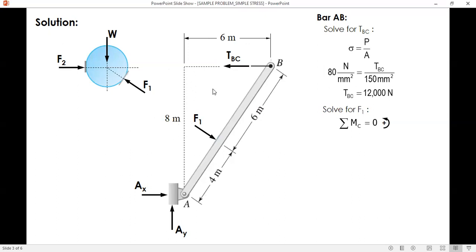8 is the perpendicular distance of TBC to point A. Sign convention is counterclockwise positive. The moment of F1 is negative since clockwise, and for TBC positive since it's counterclockwise. We have TBC times distance 8 minus F1 times perpendicular distance 4. Solving for F1, we will substitute the value of TBC 12,000, transpose this term, and after multiplying you divide by 4. F1 is equal to 24,000.